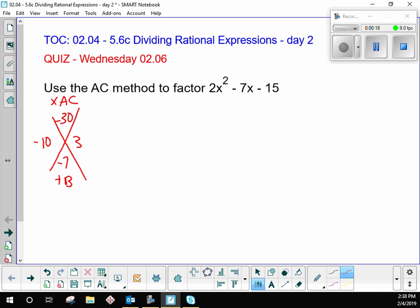We use that to rewrite the middle term. And then we just bring down the other things. So we just took negative 7x and split it up into two things, negative 10x and 3x. And now that we have four terms, what factoring method do we do? Grouping, right?